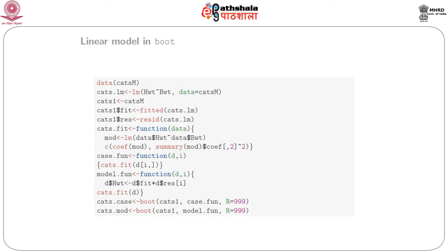Before going into confidence intervals, we would see how to implement a linear model using the boot package. For the linear model bootstrap, the data is generally a matrix or a data frame. We can use two methods: one method is to resample rows, and the other method is to resample the residuals. Whichever method we take, we can then reconstruct a response vector. We are showing here both methods, and this code is taken verbatim from the article 'Resampling Methods in R'.